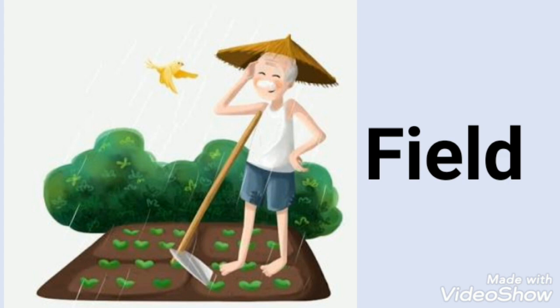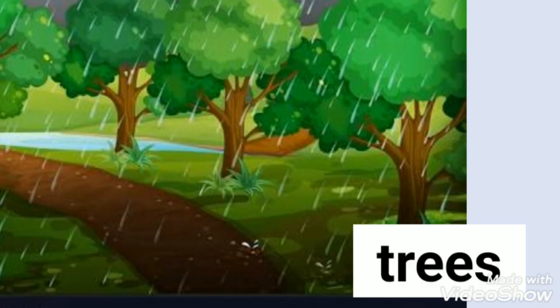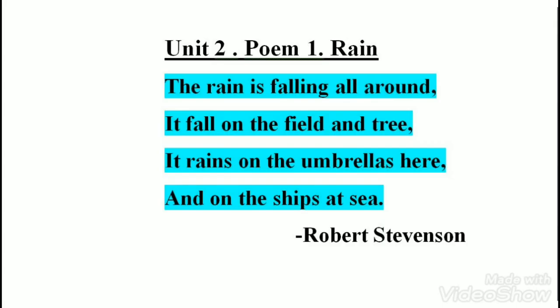This is the image of a field. He says rain is falling on the trees as well. This is the image of trees. Can you see rain falling on the trees? Let us read the first two lines again. The rain is falling all around. It falls on the field and tree. I hope these two lines are clear to you.